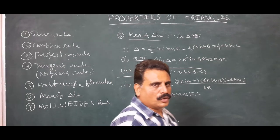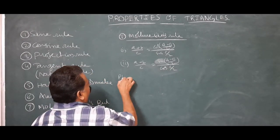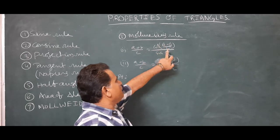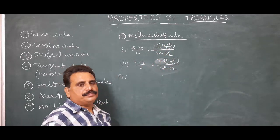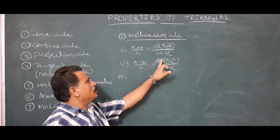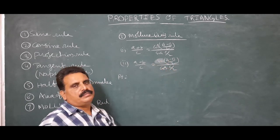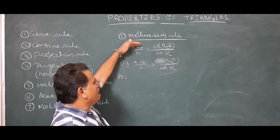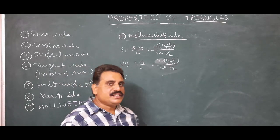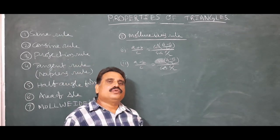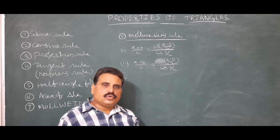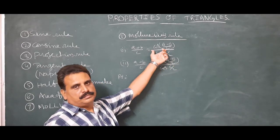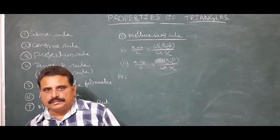Seventh point: Mollweide's rule. (a+b)/c = cos((A−B)/2) / sin(C/2) and (a−b)/c = sin((A−B)/2) / cos(C/2). By dividing these two expressions — second by first — we can also derive the tangent rule. The proof uses the sine rule substitutions a = 2r sin A, b = 2r sin B, c = 2r sin C and sum-to-product transformations. Thank you, dear students. Bye.